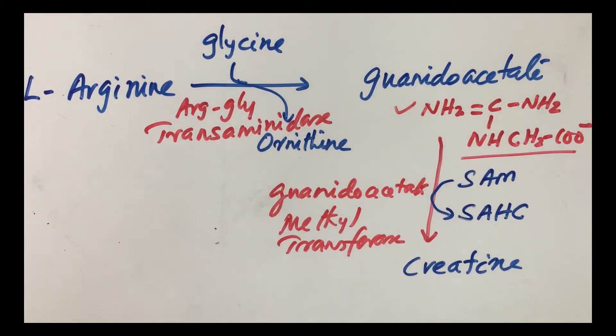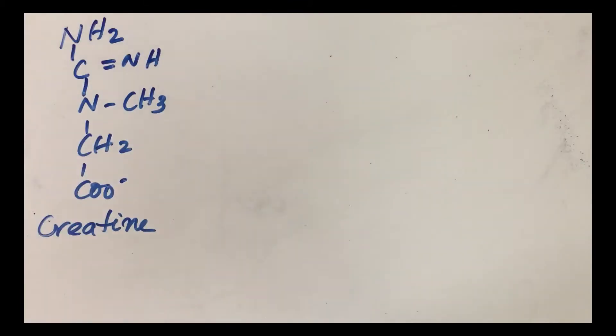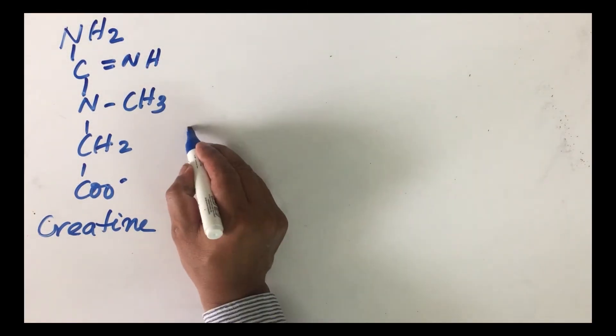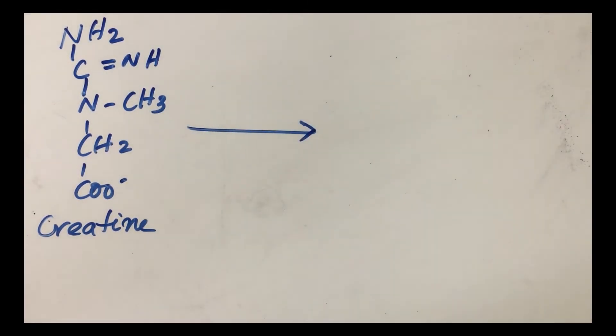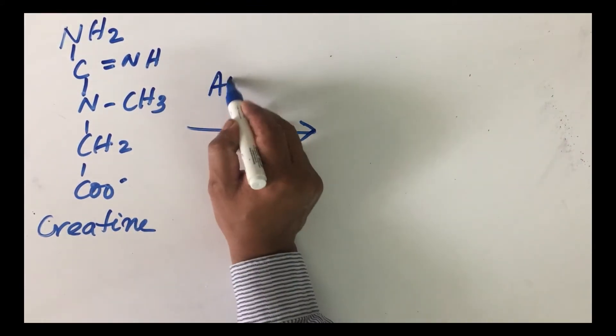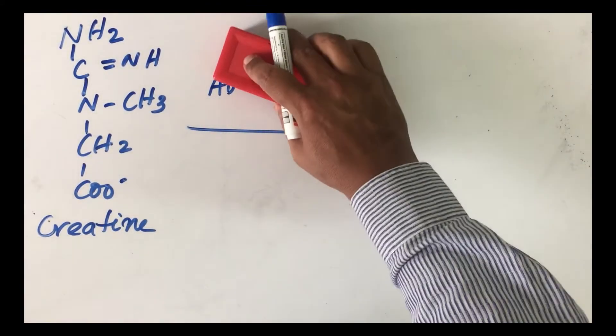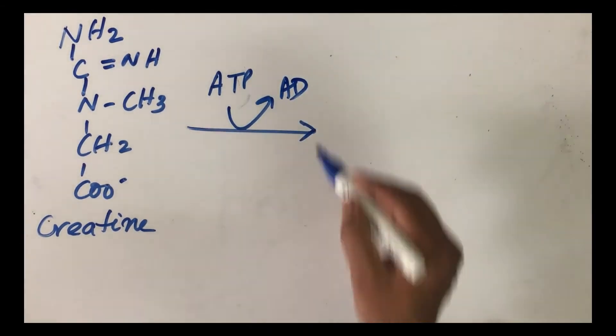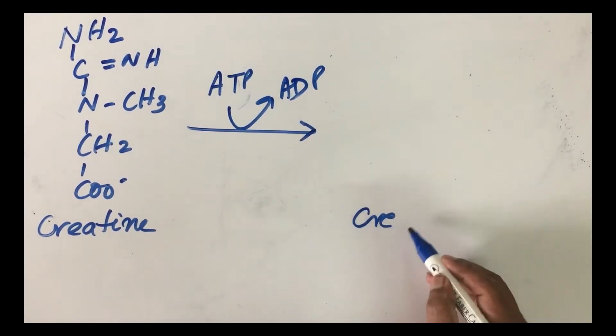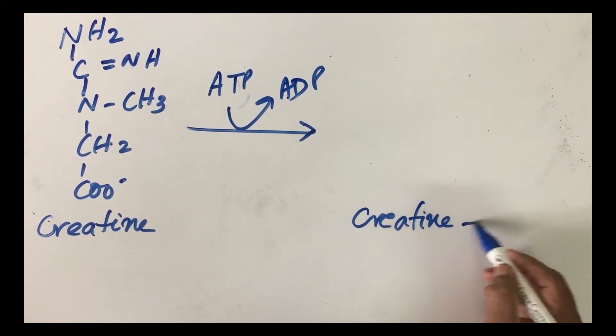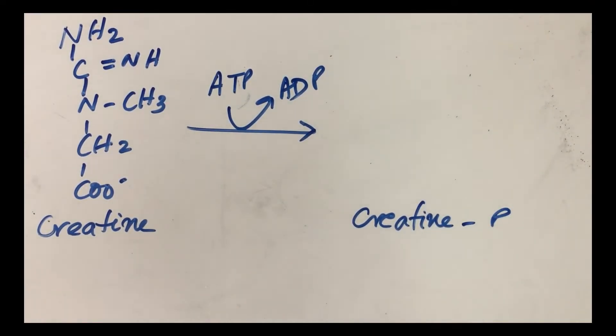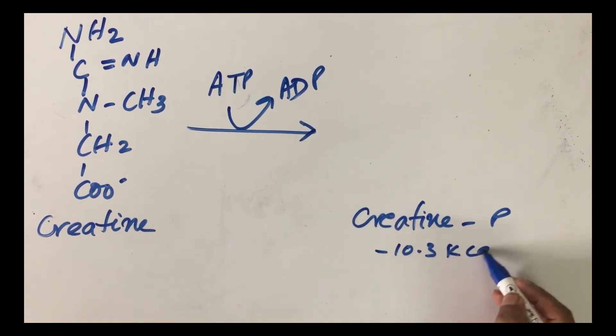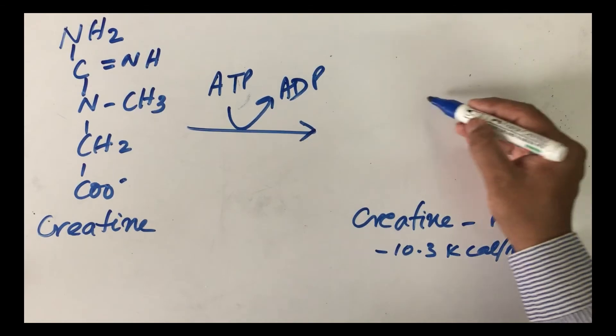Let us write down the structure of creatine. Creatine is formed in liver. From liver, this can be transported to muscle. Then what happens is you can add ATP molecules to creatine, forming ADP, and you can make creatine phosphate. This is an energy rich molecule minus 10.3 kilocalories of energy per mole.